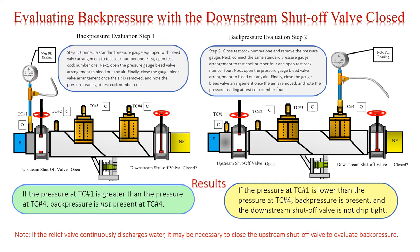Results. If the pressure at test cock number one is greater than the pressure at test cock number four, back pressure is not present at test cock number four. Back pressure is present and the downstream shutoff valve is not drip tight. Note: if the relief valve continuously discharges water, it may be necessary to close the upstream shutoff valve to evaluate back pressure.